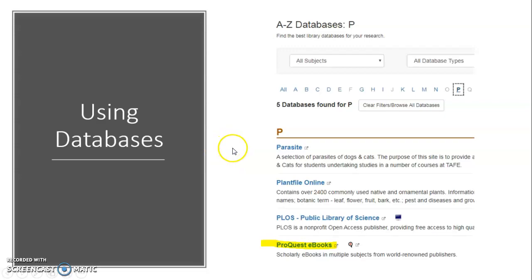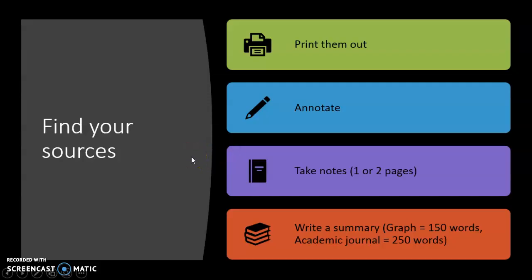Once you've found your sources, you're going to print them out, annotate them, and take notes. You'll have about one or two pages of notes per source. You do this with all of the two sources that you submit. Personally, I would do this with all of your sources. The annotation is useful to help you find information and write your report. With the other two sources, you will have to write a summary. The one with the graph is going to be 150 words, similar to IELTS academic task one.